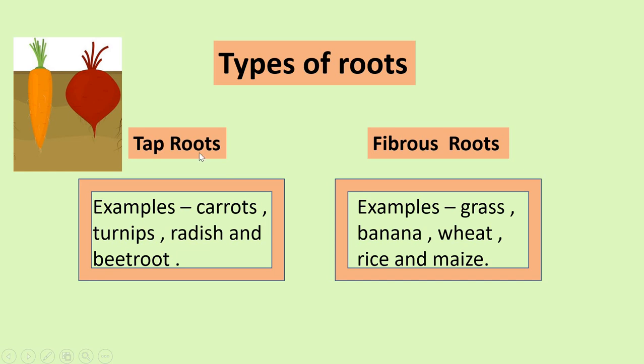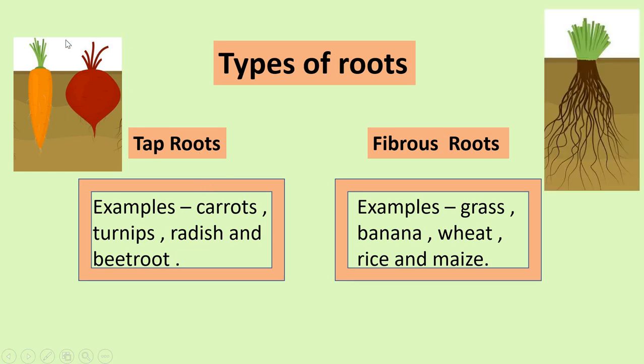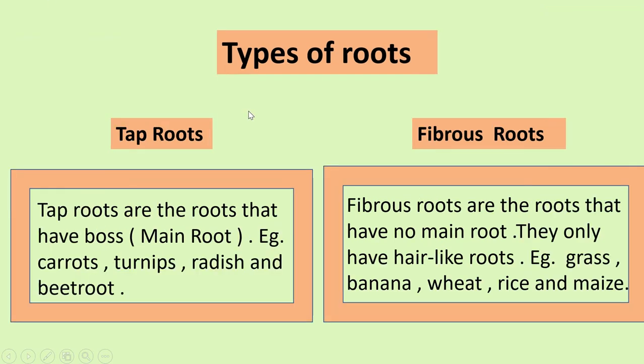Now, what are the tap roots and fibrous roots? You can see in the picture also. See here grass is going and below the ground, you see the fibrous roots here. And the tap roots, you can see above the ground. These are the tap roots. Okay? Carrots, turnips, radish, these are examples.